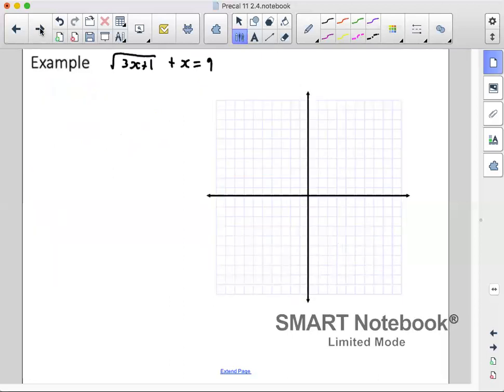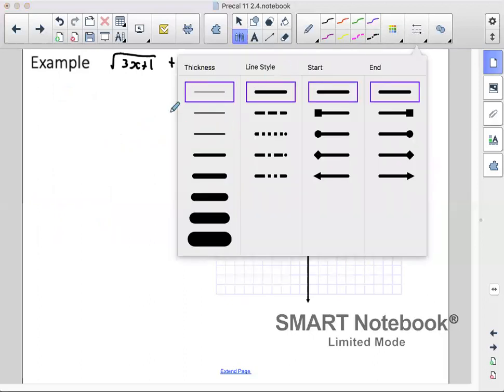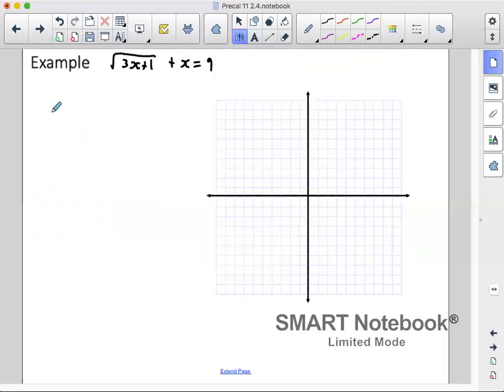Next example, we've got square root of 3x plus 1 plus x equals 9. Do the same thing as before, so rearrange it. I've got root of 3x plus 1 equals negative x plus 9.